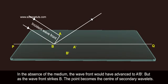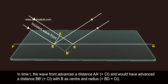But as the wave front strikes B, the point becomes the center of secondary wavelets.